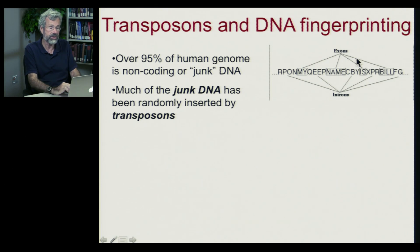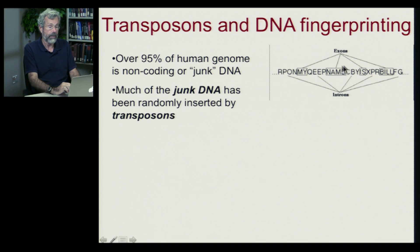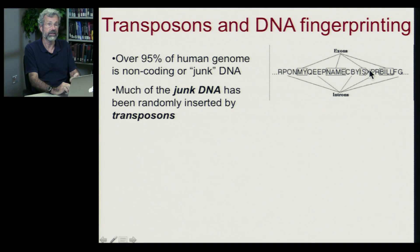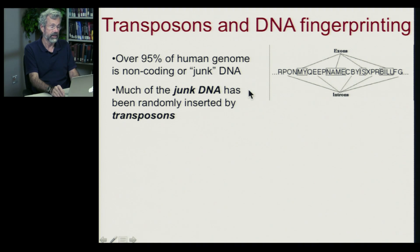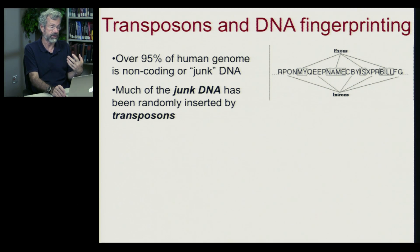We have already seen, when we looked at transcription and translation, that the process had to find the exons — the coding parts of DNA that end up as proteins — and get rid of the introns, which are just nonsense phrases. It seems that in many cases these nonsense phrases were put there by transposons in our evolutionary history.